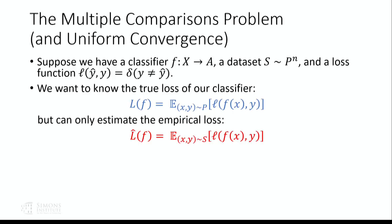The most basic problem with validating many different hypotheses is what's known as the multiple comparisons problem, and is the problem of uniform convergence in machine learning. Let me introduce it in the framework of validating the performance of machine learning models, although of course it's more general.